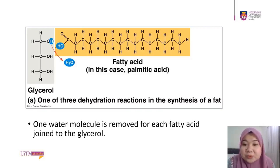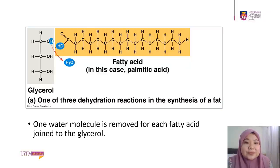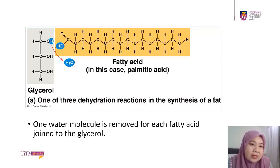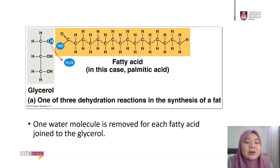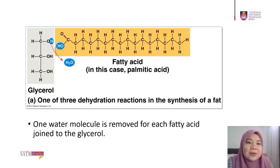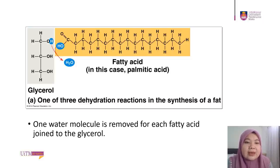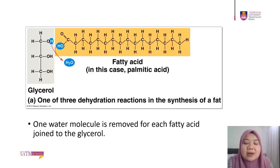This condensation process joins glycerol and fatty acid. Glycerol has three carbon molecules with a hydroxyl group attached to each. You can see the carboxyl at one end of the fatty acid. Condensation is dehydration — we remove a water molecule by removing a hydrogen and a hydroxyl. Because of this dehydration process, a new covalent bond — the ester bond — is formed. One water molecule is removed for each fatty acid joined to the glycerol.